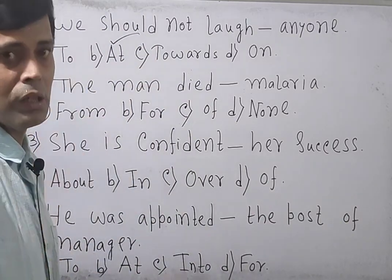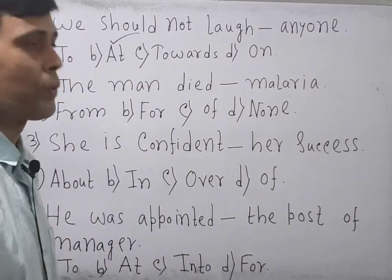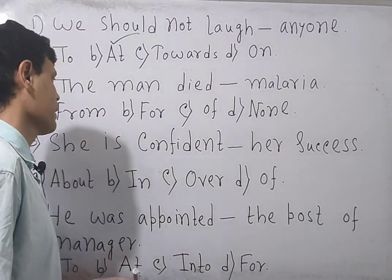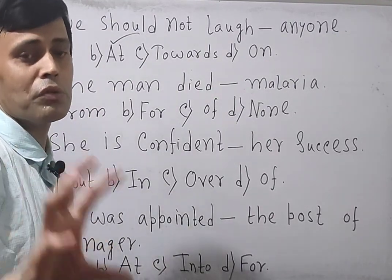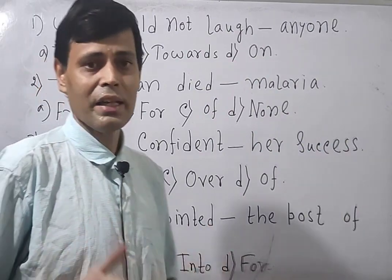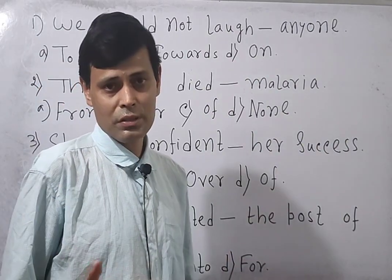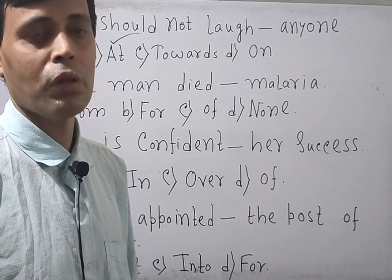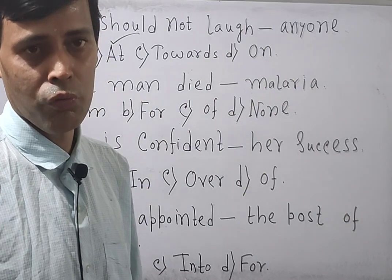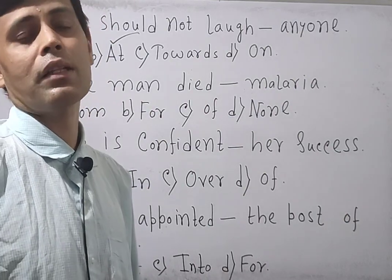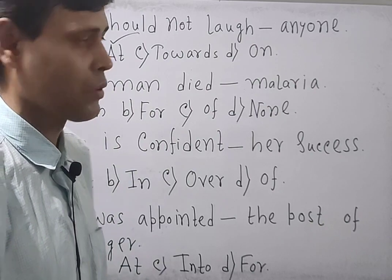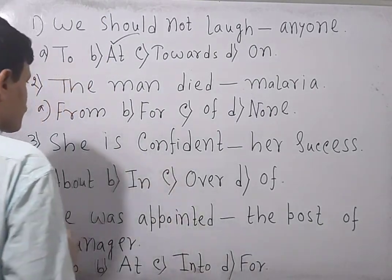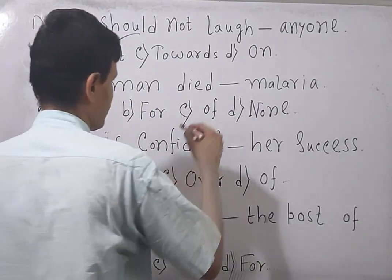Next sentence: 'Diamond died ___ malaria.' Whenever you use the word 'die' in the context of a disease, keep in mind that you need to use the preposition 'of' — this is a rule of fixed prepositions. Out of the given options — from, for, of, none — 'of' will be the answer.